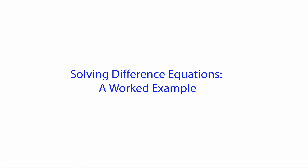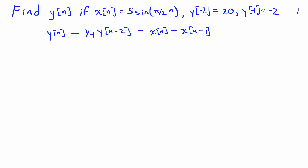In this video, we're going to work through an example of solving a difference equation by hand to find the output for a given input and set of initial conditions. Our goal is to find the output y[n] for an input x[n] given by 5 times sine of (π/2)n, with initial conditions y[-2] = 20 and y[-1] = -2. The system is described by the difference equation y[n] - (1/4)y[n-2] = x[n] - x[n-1].